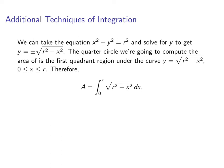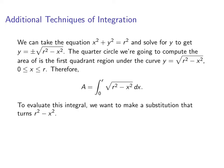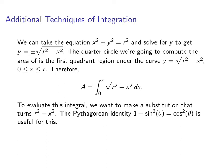So that means what we're really doing is evaluating this integral: the integral from 0 to r of the square root of r squared minus x squared dx. What we want to do is make a substitution that's going to turn r squared minus x squared into something. We'll notice that the Pythagorean identity, 1 minus sine squared theta equals cosine squared theta, is actually going to be useful for this.